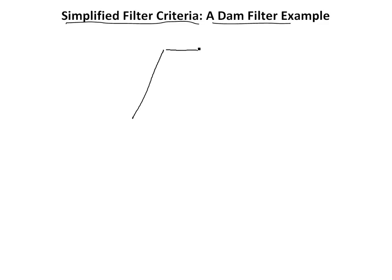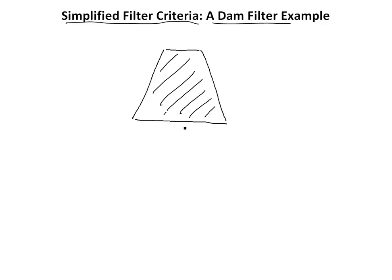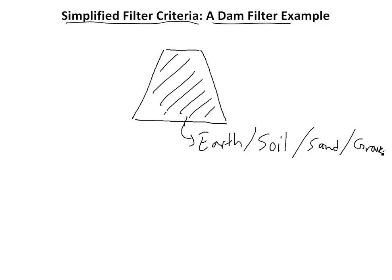Alright, time for another math easy solution — we'll discuss the simplified filter criteria. This is another video on soil mechanics, and we'll look at a simple dam filter example. Say we have the core of a dam; this could be made of earth material, concrete, soil, sand, gravel, and so on. On one side you're holding the water, and we want to protect the core from erosion and control what kind of sediment the water carries, so we'll get a filter.